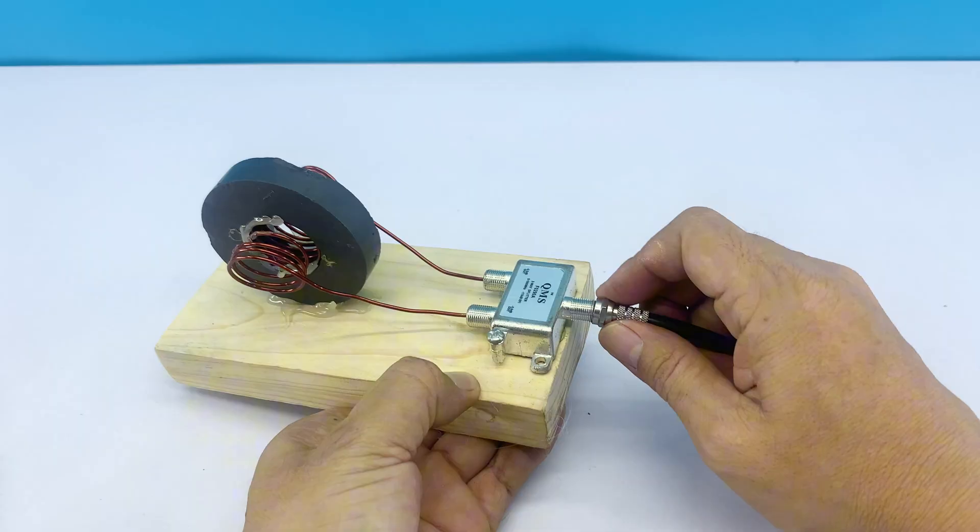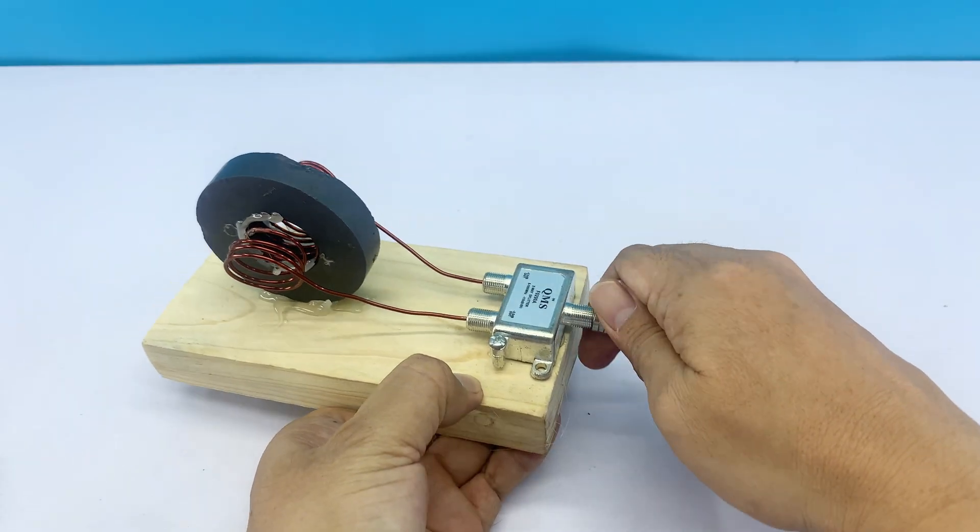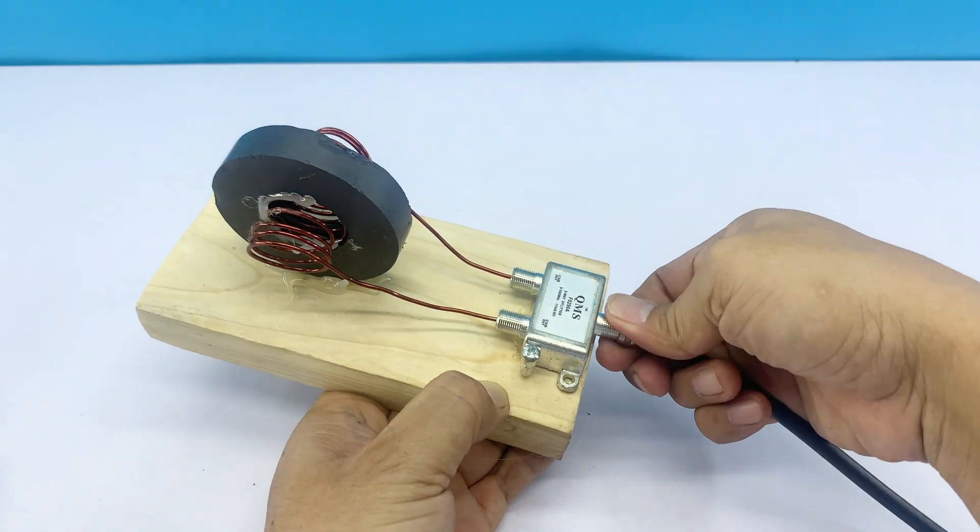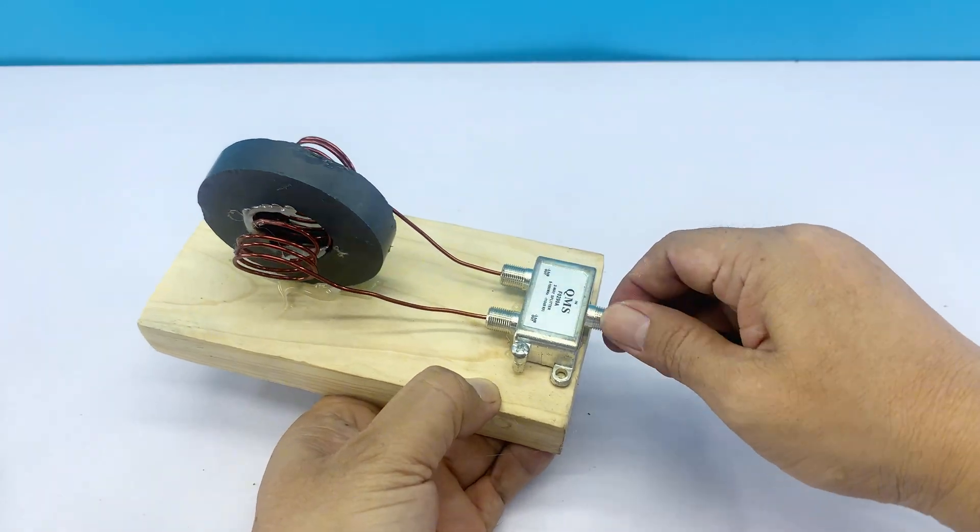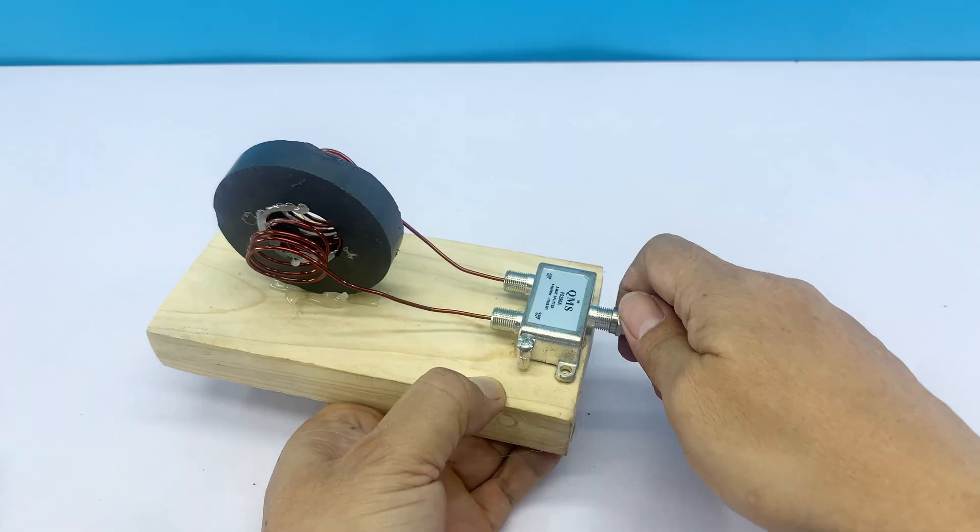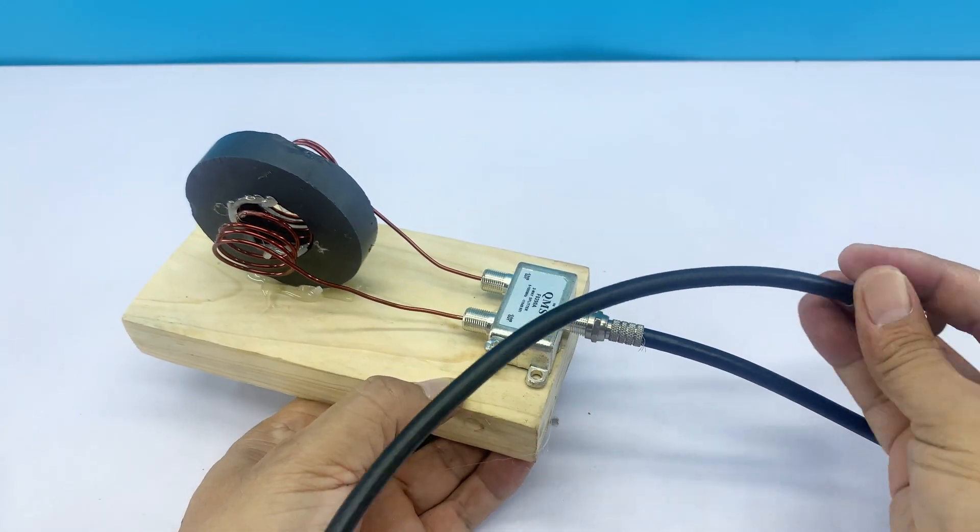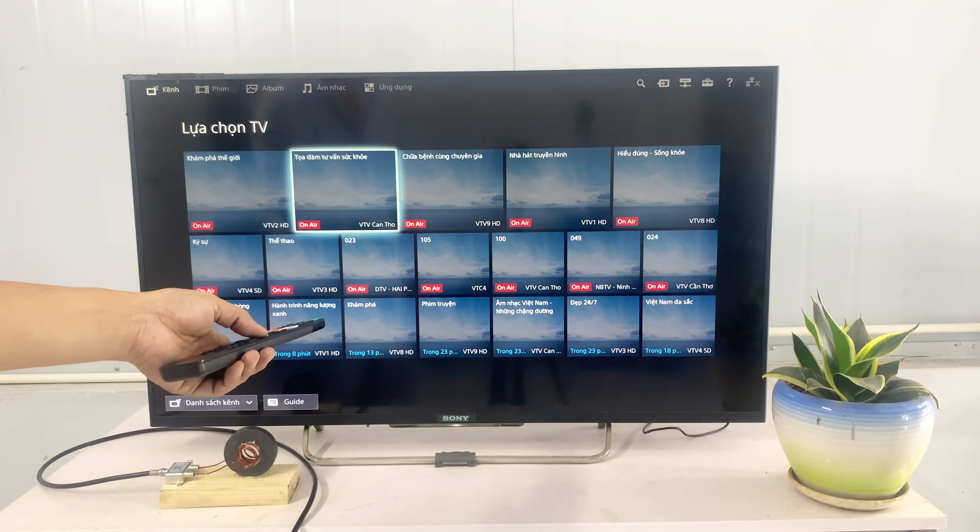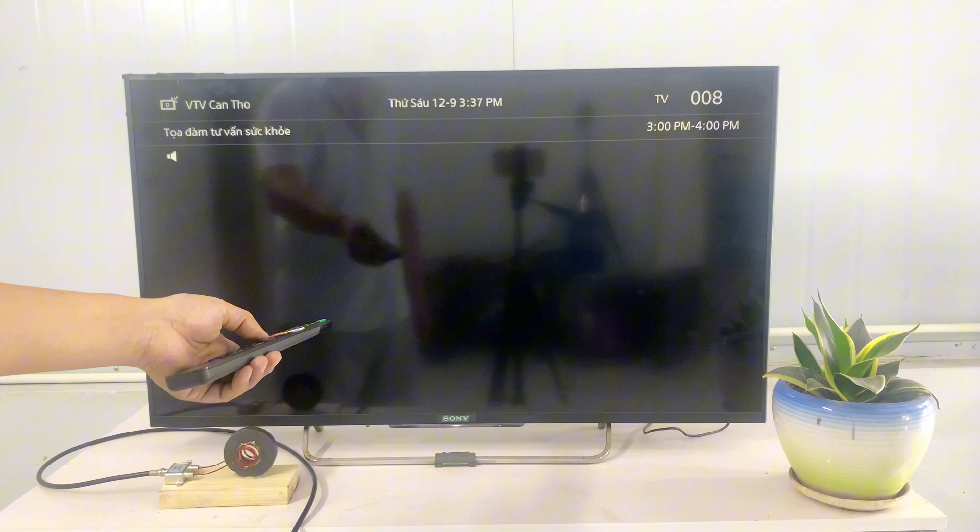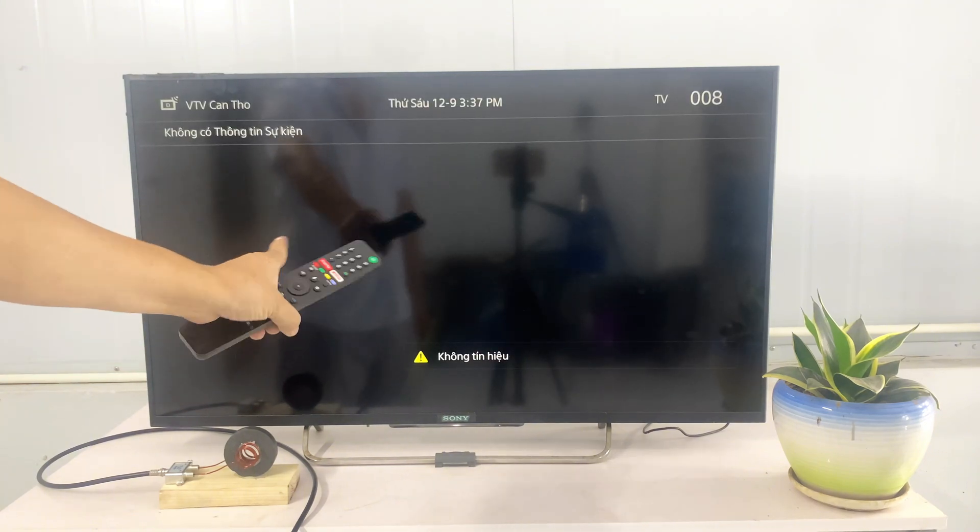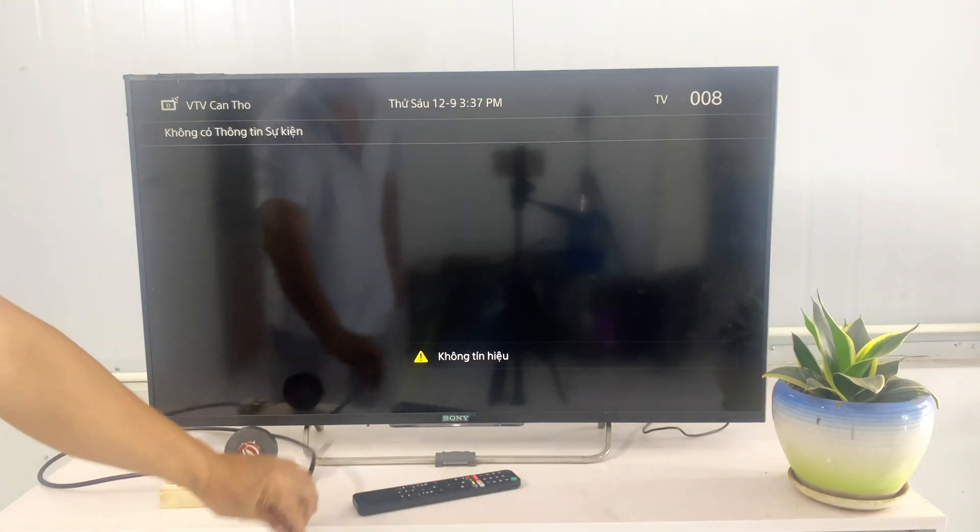And with that, we've finished building the homemade antenna along with its dedicated connection cable. Everything is ready, so let's move on to the testing phase and see how it performs in practice. This is the moment when the idea finally turns into a real experience. At the moment, my TV isn't receiving any signal because it hasn't been connected to the antenna yet. But in just a moment, you'll see it in action.